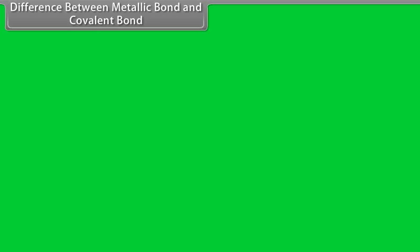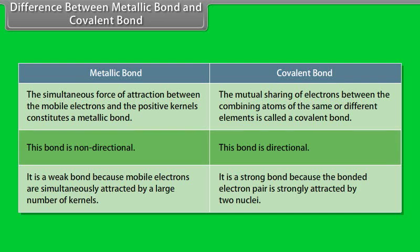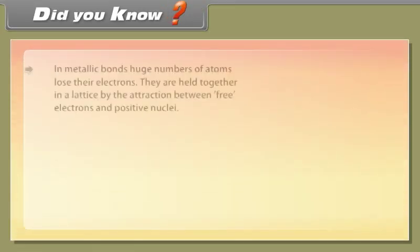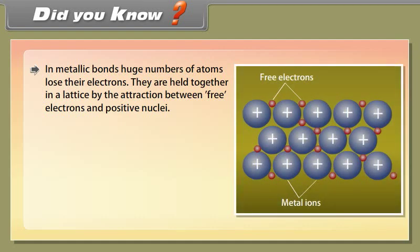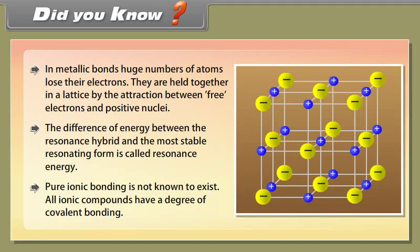Difference between metallic bond and covalent bond: the simultaneous force of attraction between mobile electrons and positive kernels constitutes a metallic bond, whereas mutual sharing of electrons between combining atoms is called a covalent bond. Metallic bond is non-directional, whereas covalent bond is directional. Metallic bond is weak because mobile electrons are simultaneously attracted by a large number of kernels, whereas covalent bond is strong because the bonded electron pair is strongly attracted by two nuclei. In metallic bonds, the difference of energy between the resonance hybrid and the most stable resonating form is called resonance energy. Pure ionic bonding is not known to exist — all ionic compounds have a degree of covalent bonding.